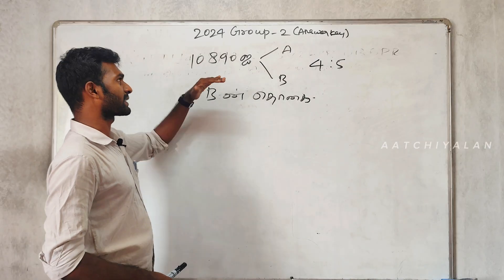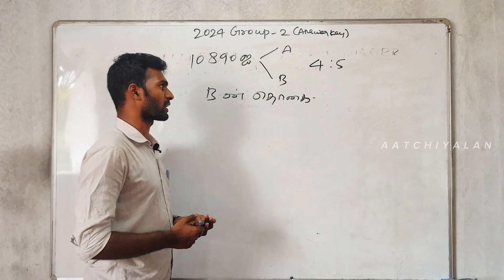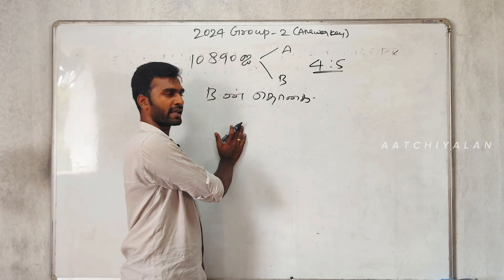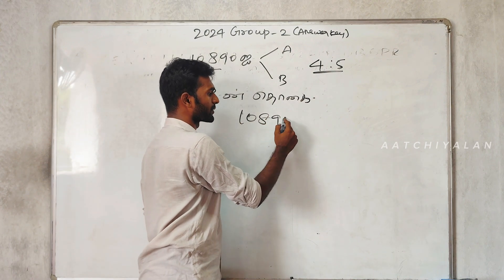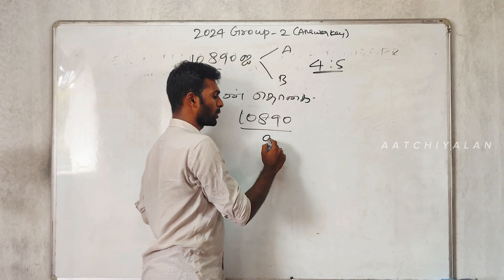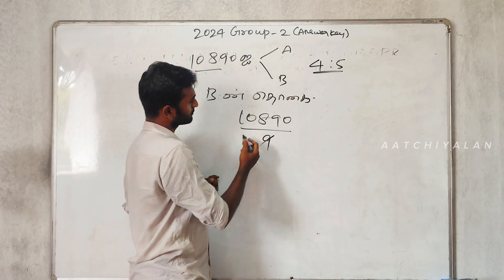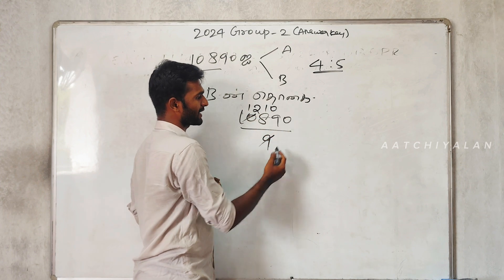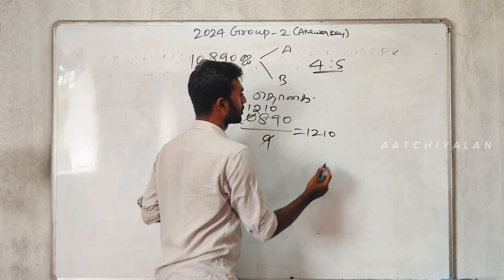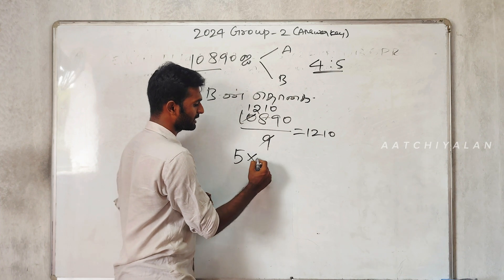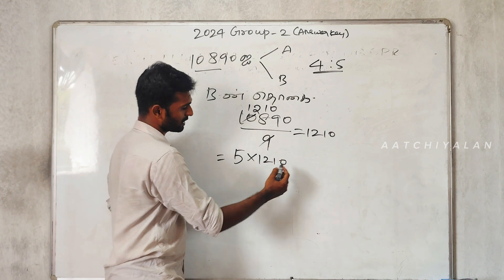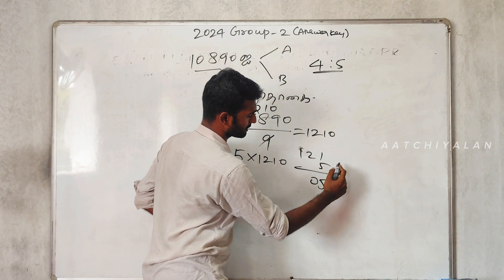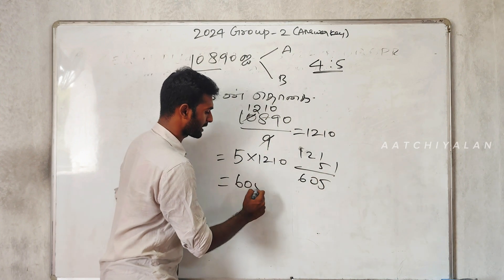We have a question about A and B share. The difference is 5 is to 5. Total is 10, 80, 90. The total share is 90. 4 plus 5 is 9. When you cancel the difference, 10 is over 90. So 1 share is 5 share — 5 is 10, 90. The answer is 610.